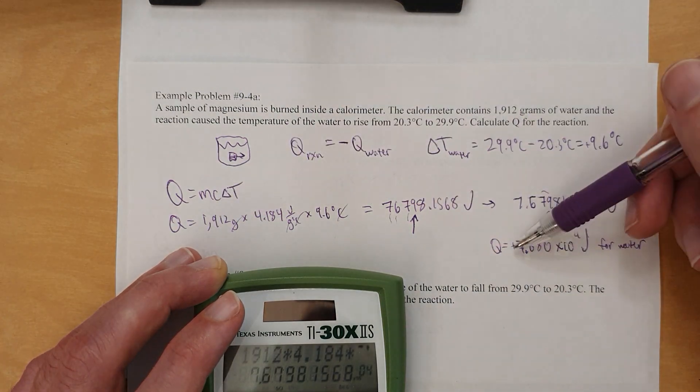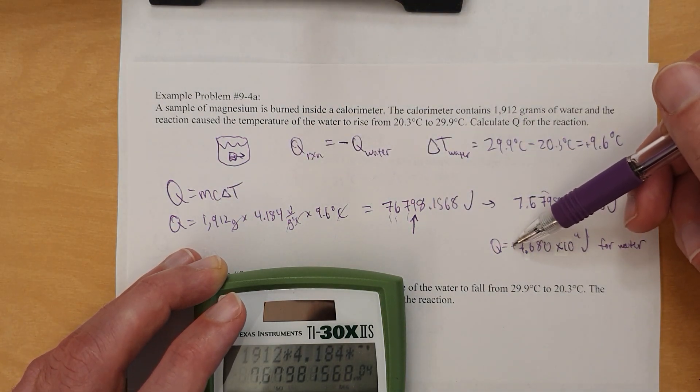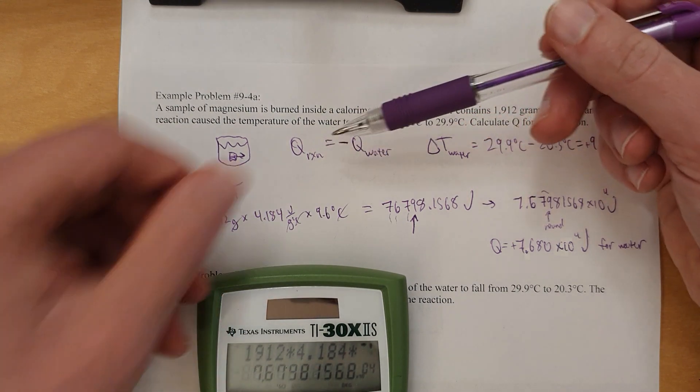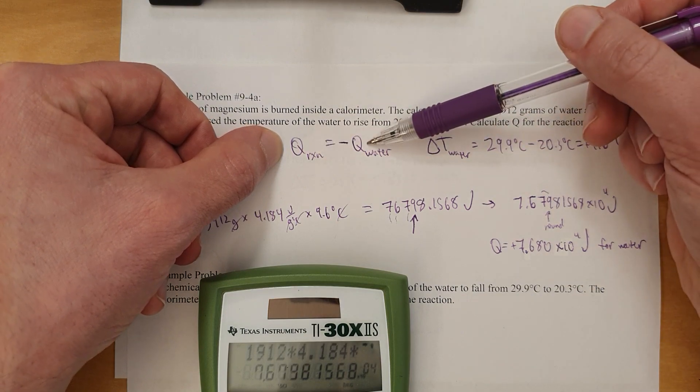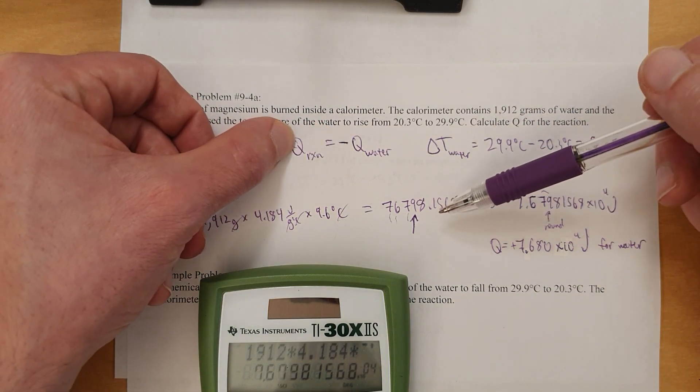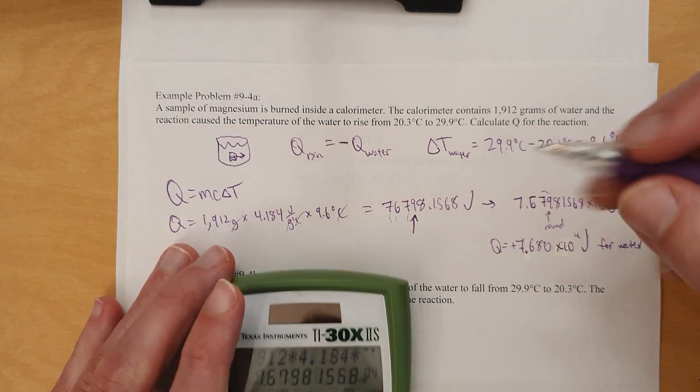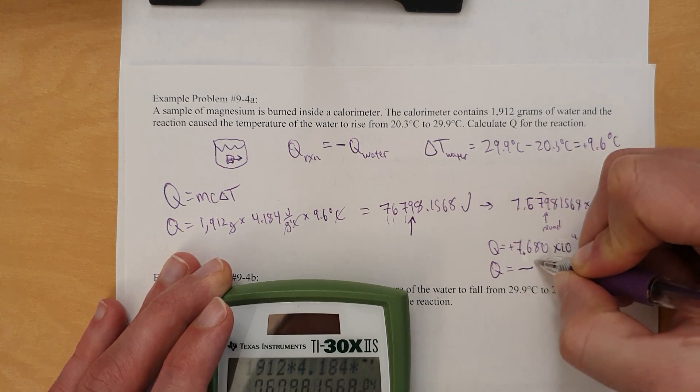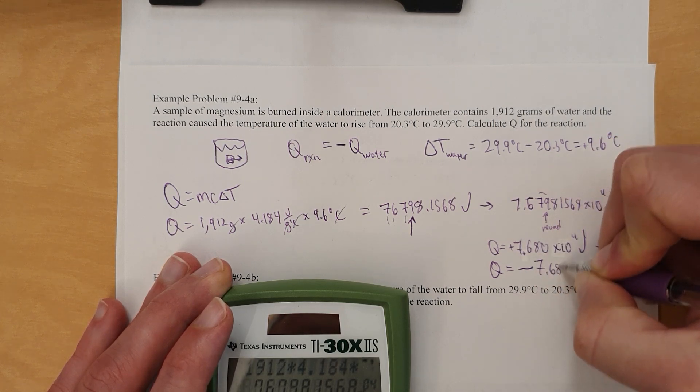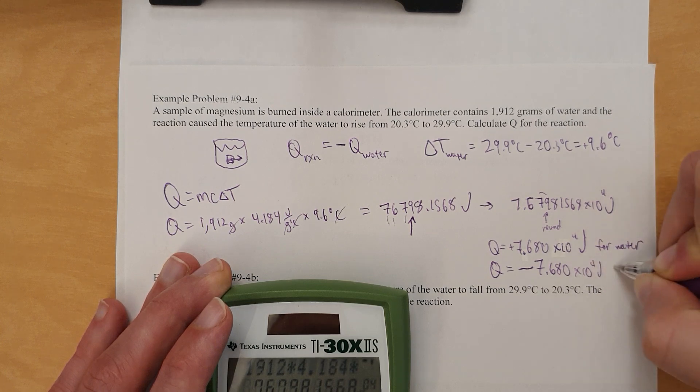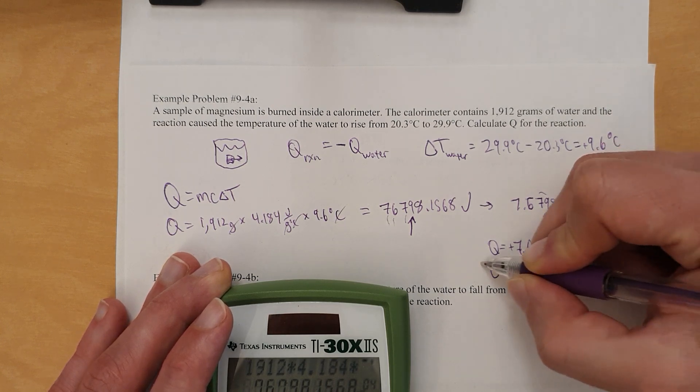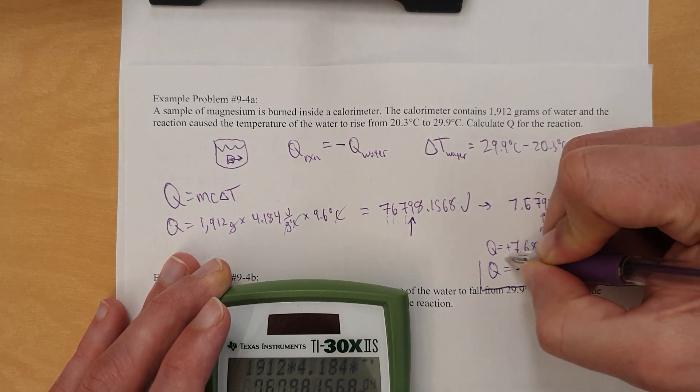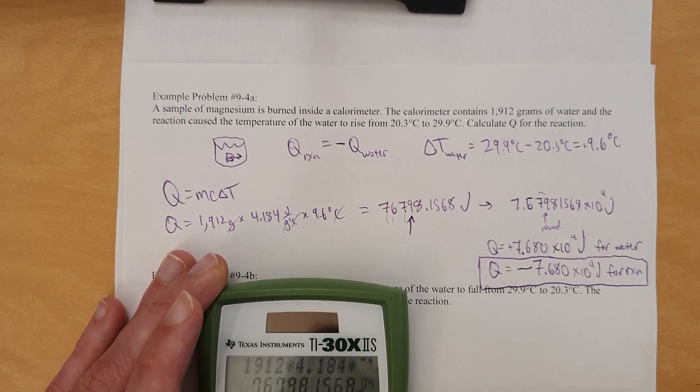And now here's the thing. The answer is positive for water because the temperature went up. Therefore the water gained joules. However, we need to understand if the water's, whatever the water is, Q of the reaction is opposite. Or we can say Q of the reaction is the opposite of what water is. So if water is negative, Q of the reaction is positive. If water is positive, Q of the reaction is negative. So Q is equal to the same one, but negative because this one's positive. So negative 7.680 times 10 to the 4th joules for the reaction. And that is a very important distinction. Alright, there's that.